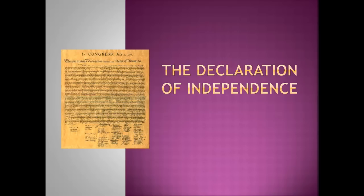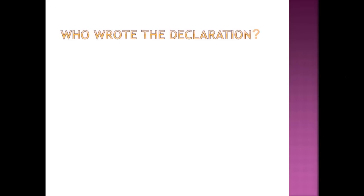By the year 1776, the English colonists had reached the end of their tolerance for British interference in their colonial governments, as well as their decision to levy taxes on the colonists without the benefit of representatives in Parliament. The decision had been made in the Second Continental Congress to separate from England and create a new independent country.